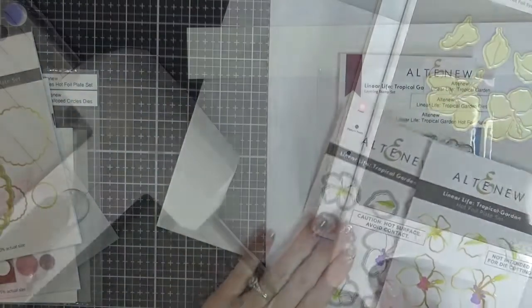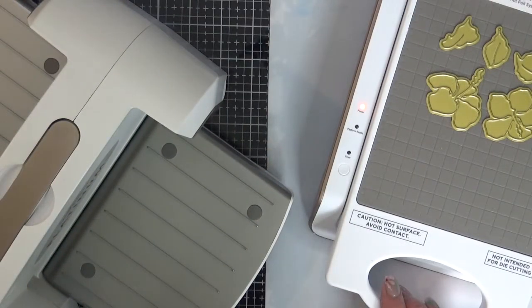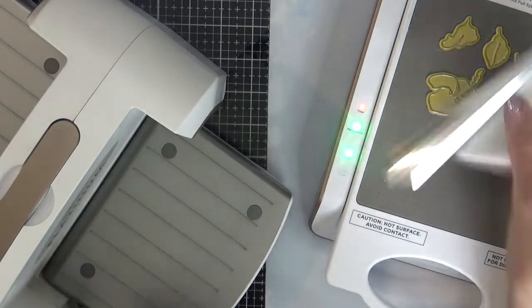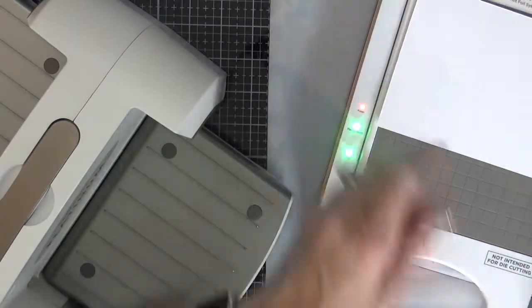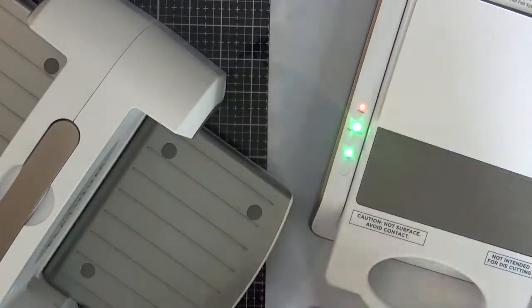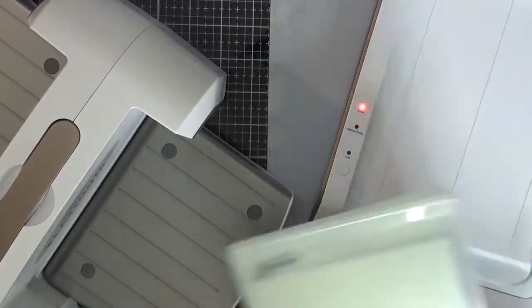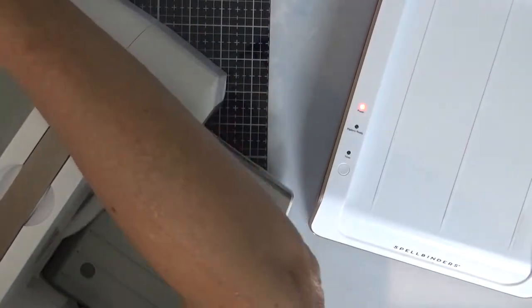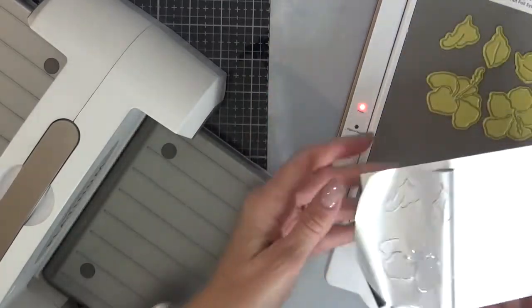We're going to do some hot foiling with the Linear Life Tropical Garden stamp die and hot foil plates. I'm using silver foil and Hammermill 110 pound cardstock. I've put the hot foil plates on, then the foil shiny side down, my paper, and then the two shims, waited for the timer to tell me it was ready, and then ran it through my die cut machine.